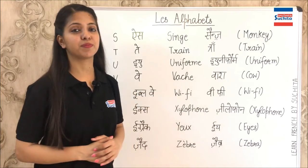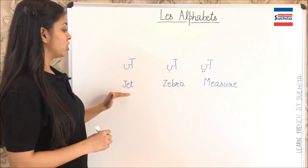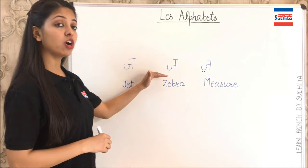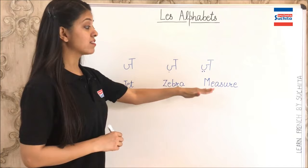Alright. So while writing the pronunciation of the words, I am going to mention three types of J. The first one is without a dot — as in jet, so J. The second one is with a single dot — and the pronunciation would be Z, as in zebra. The third one would be with a double dot — and the pronunciation would be ZH, as in the word measure or pleasure.